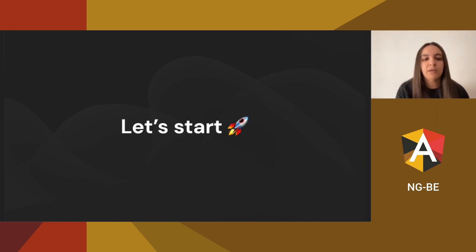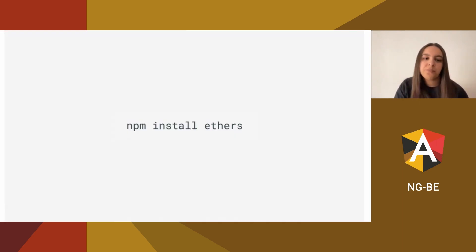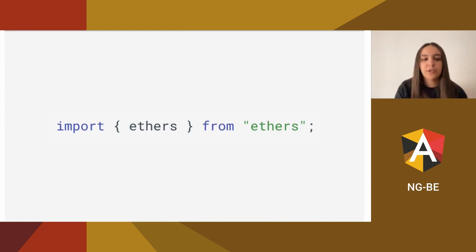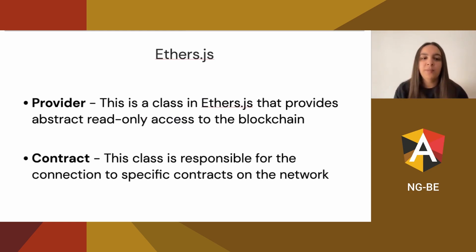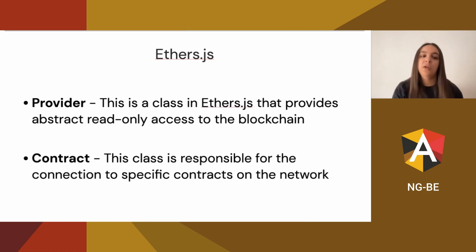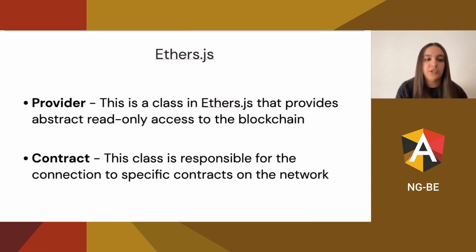With this information, we can start building our Web3 application. We need to install ethers and import it with: import { ethers } from 'ethers'. From this library, we just need to know about two classes. The Provider class, which provides communication between our front end and the blockchain, and the Contract class, which is responsible for the connection to the smart contract.